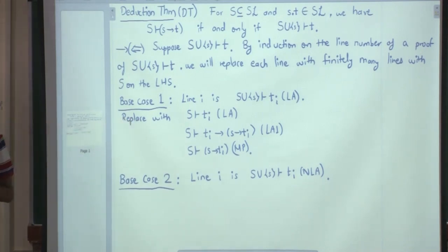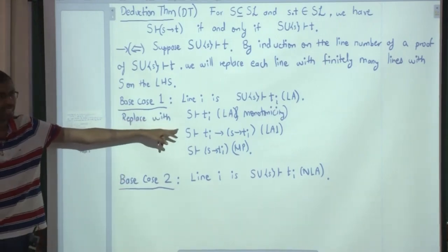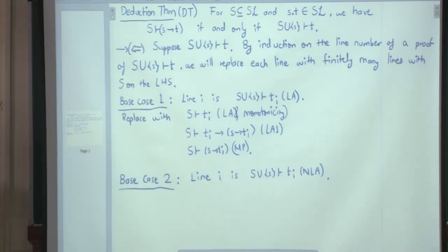So right now, we already covered this base case 1. If the reasoning for line number i is LA, so here actually I should write, by monotonicity and LA, we can conclude T_i from capital S, then this is LA1 and from that by using MP we can get this.